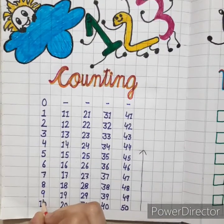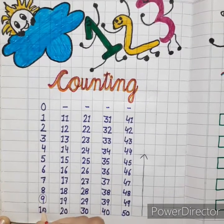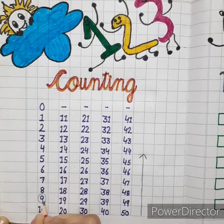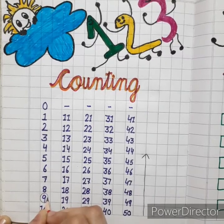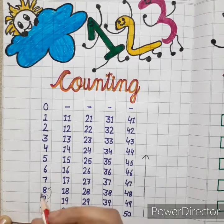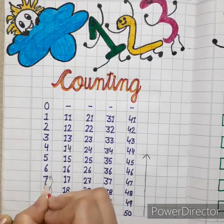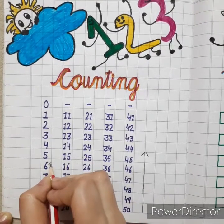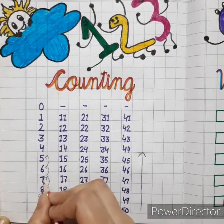So kids, see here. This is number 9. So what comes before 9? As I told you earlier, before means previous number. So which is the previous number of 9? That is 8. And what comes before 8? That is 7. What comes before 7? 6. And what comes before 6? 5. This is also called backward counting.